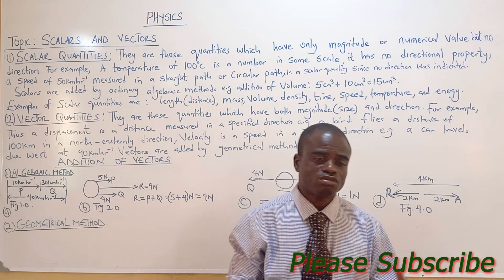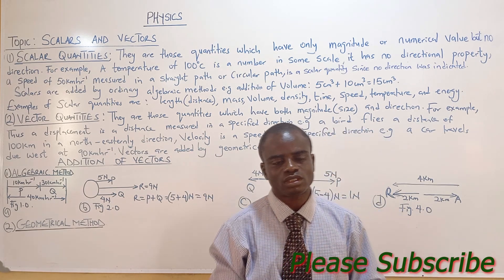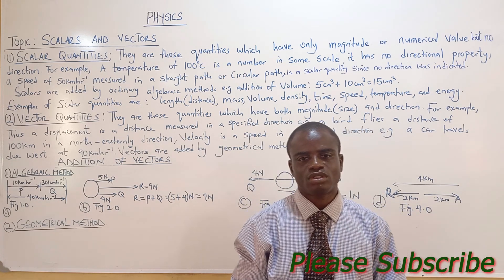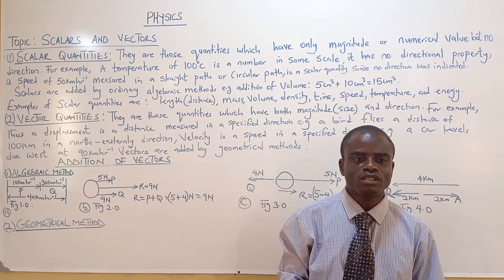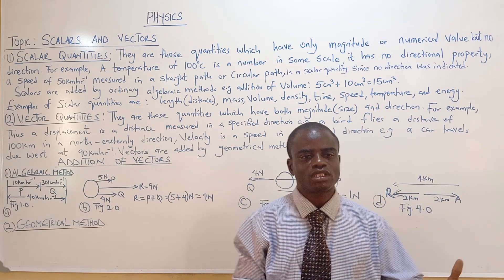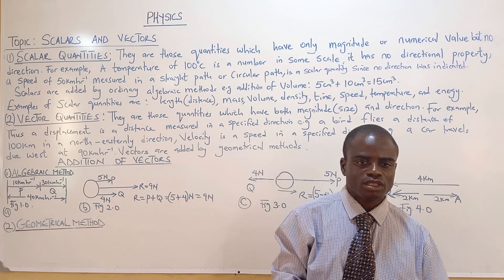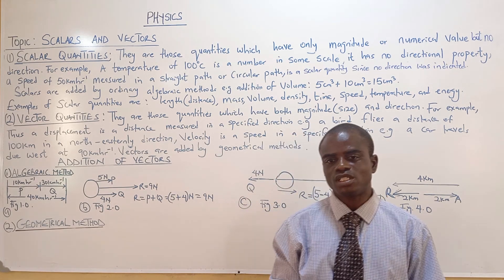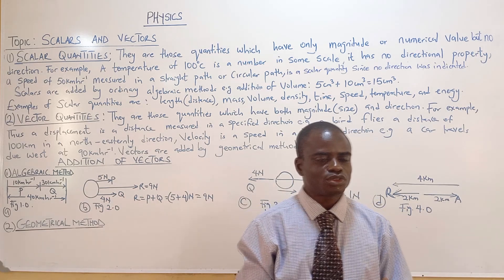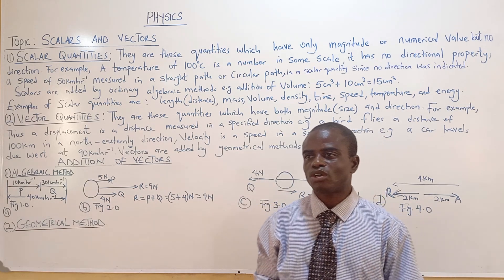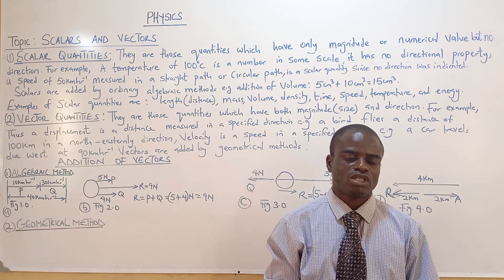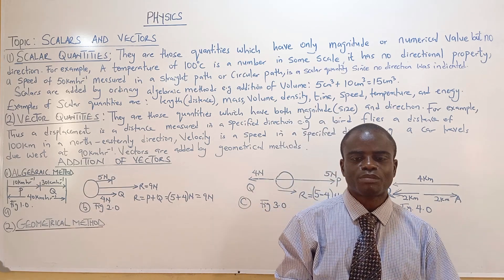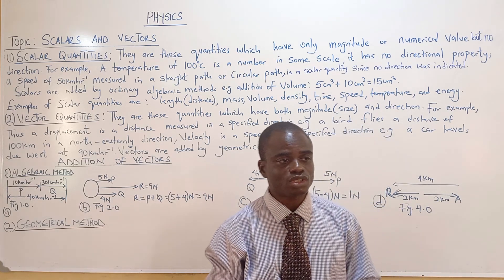Now let's go to vector quantities. Vector quantities are those quantities that have both magnitude and direction. When you say a man moves 2 meters in the easterly direction, you are giving the direction where he moves — it is no longer distance but displacement. When the car moves 2 meters per second due east, that is velocity because of the direction.